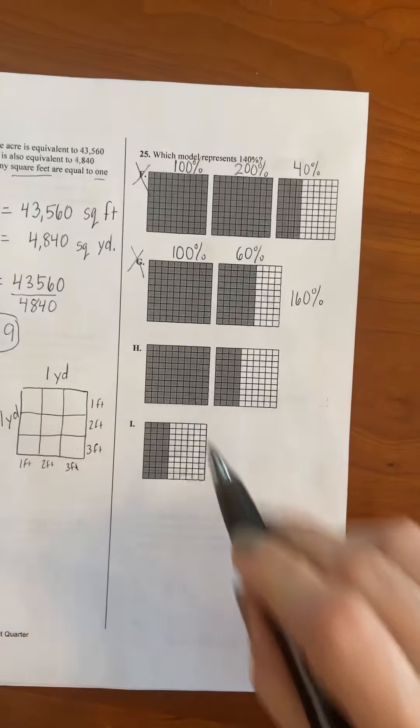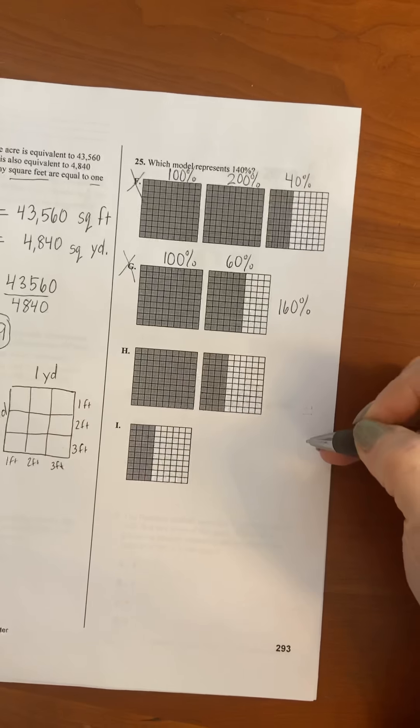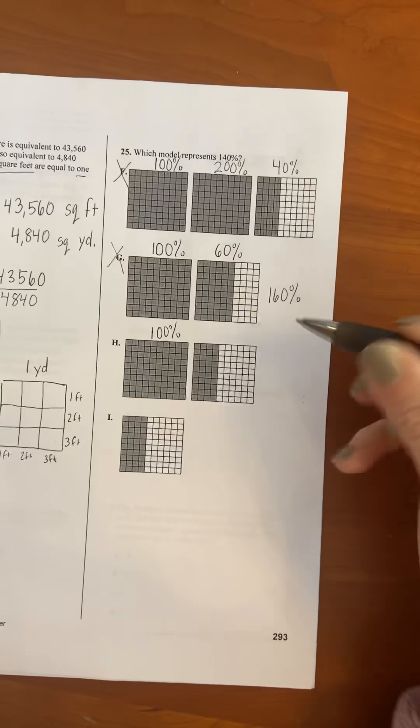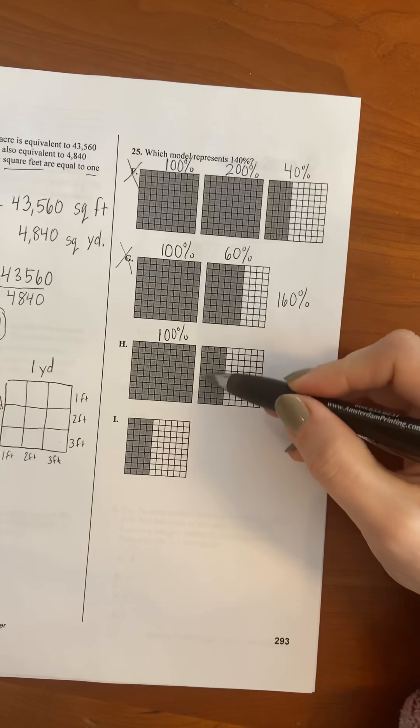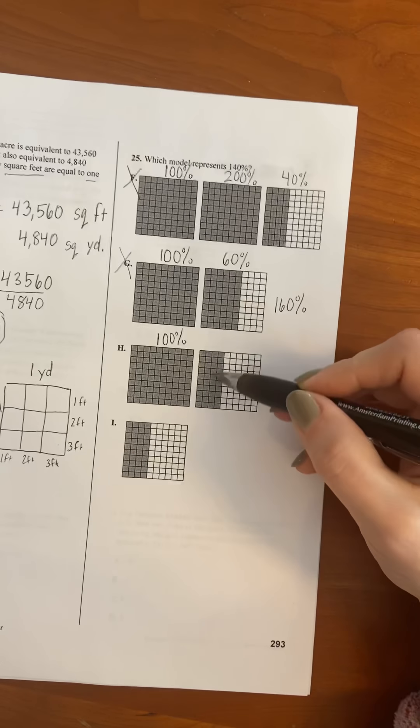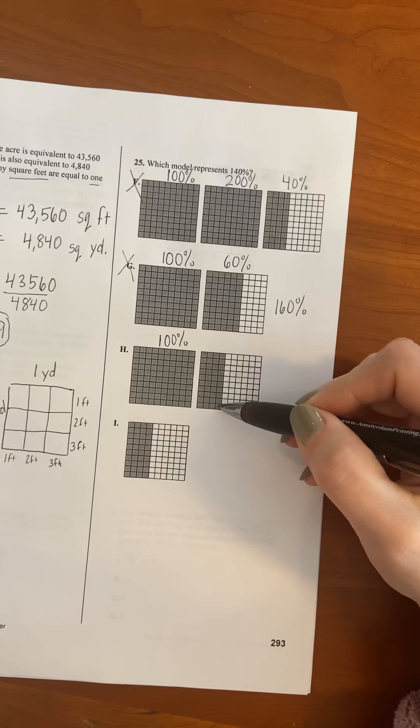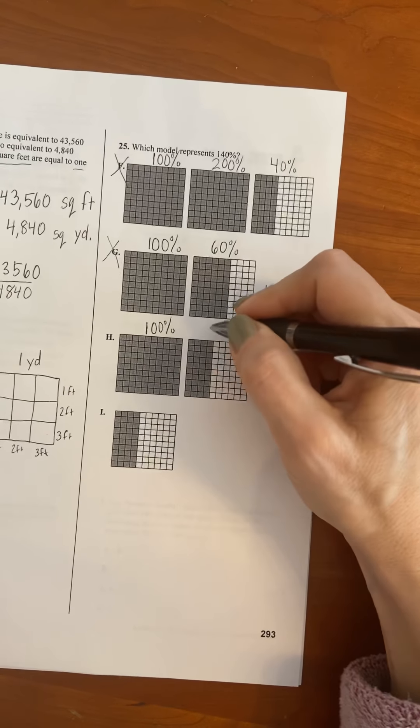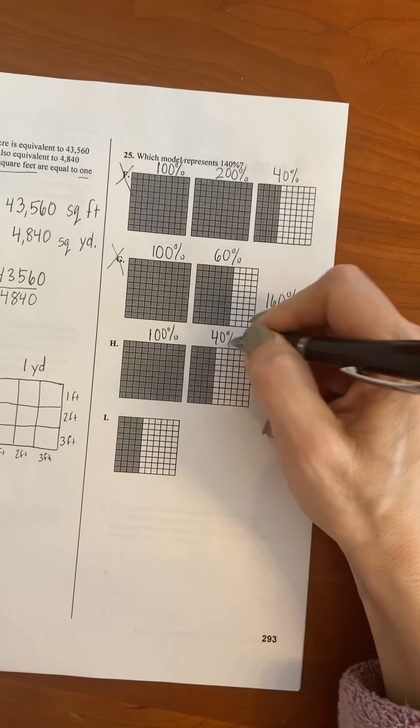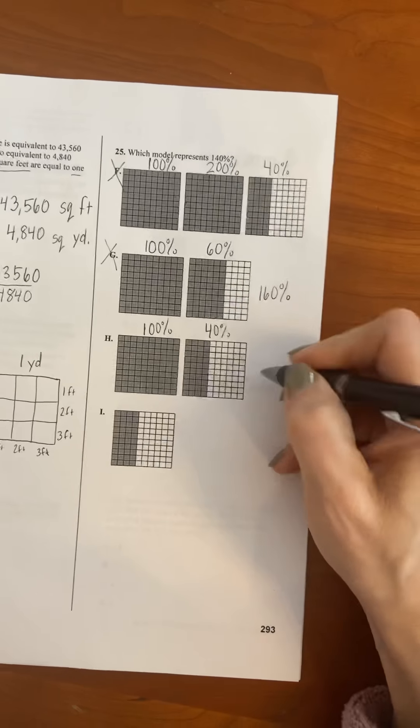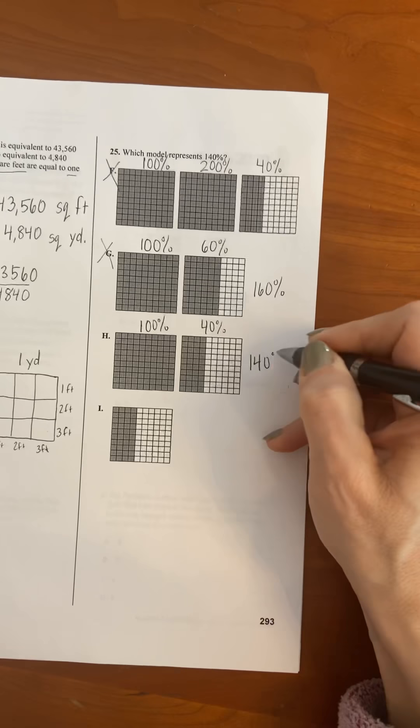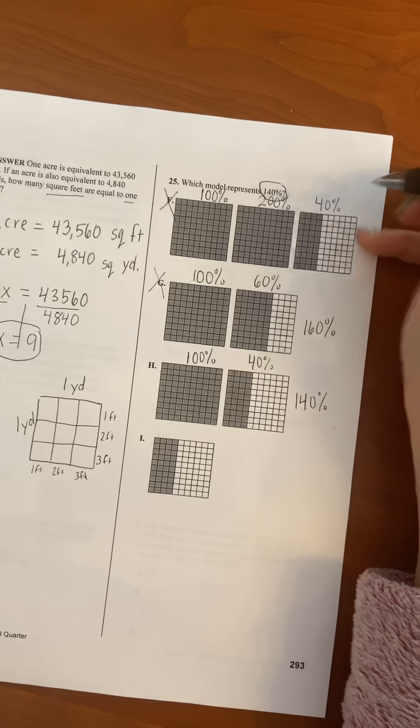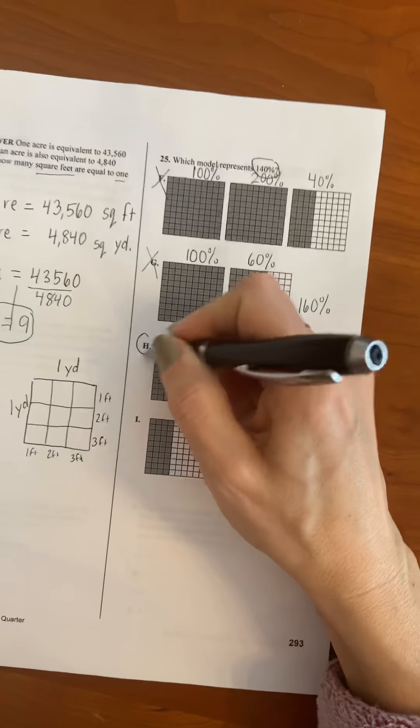Letter H has 100 out of 100 boxes shaded. So that's 100 percent. And then here we count by 10s. 10, 20, 30, 40. So 40 out of 100 boxes are shaded. 40 out of 100 is 40 percent. And so for this model, it is 140 percent, which is what they asked you up here to look for. So this is the correct answer.